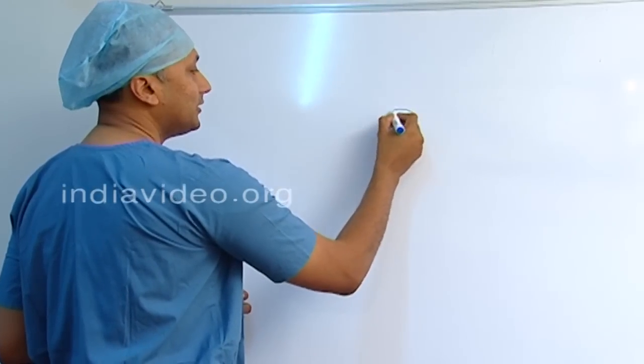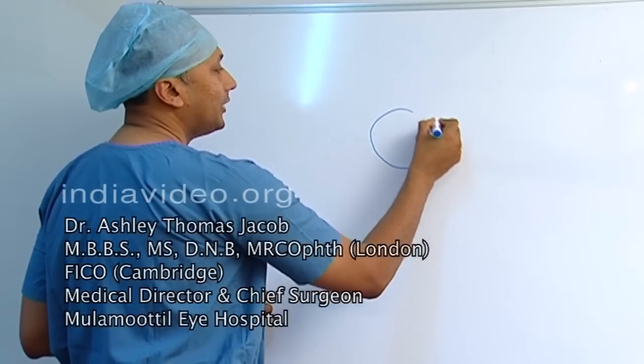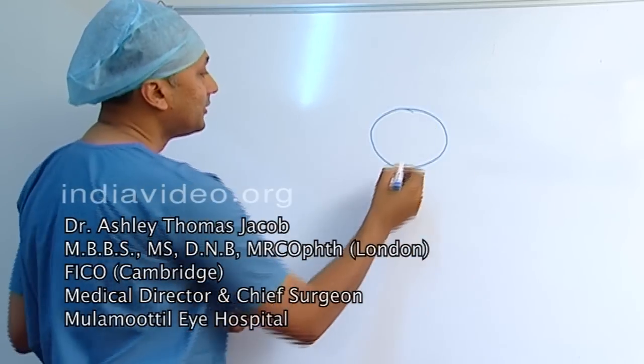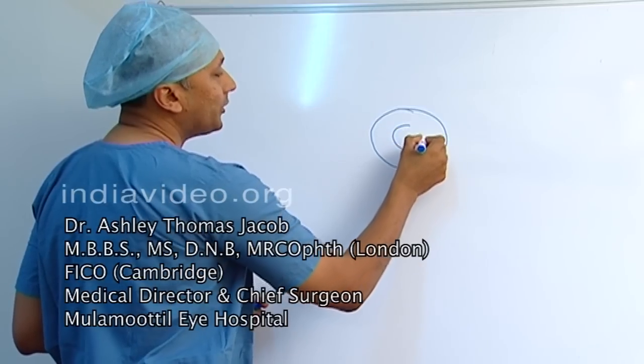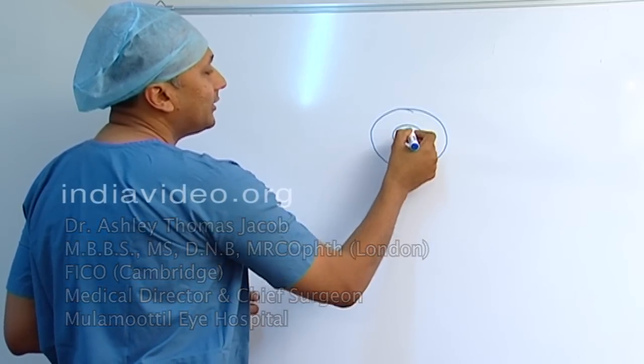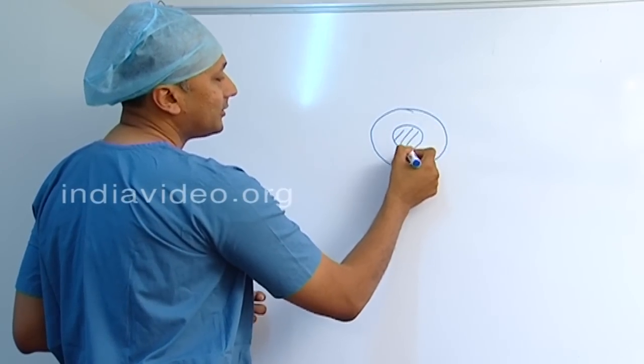To consider cataract surgery, we can suppose that this is the cornea and this is the pupil, and the lens is situated inside this.